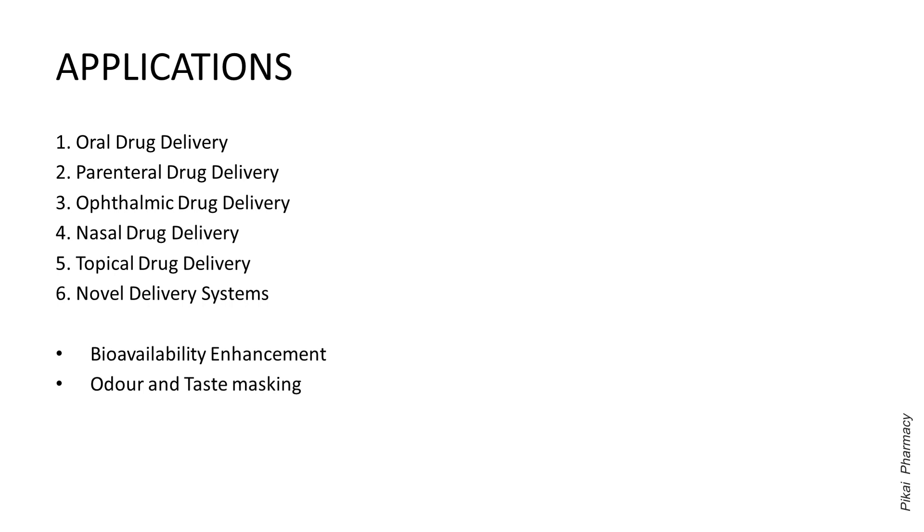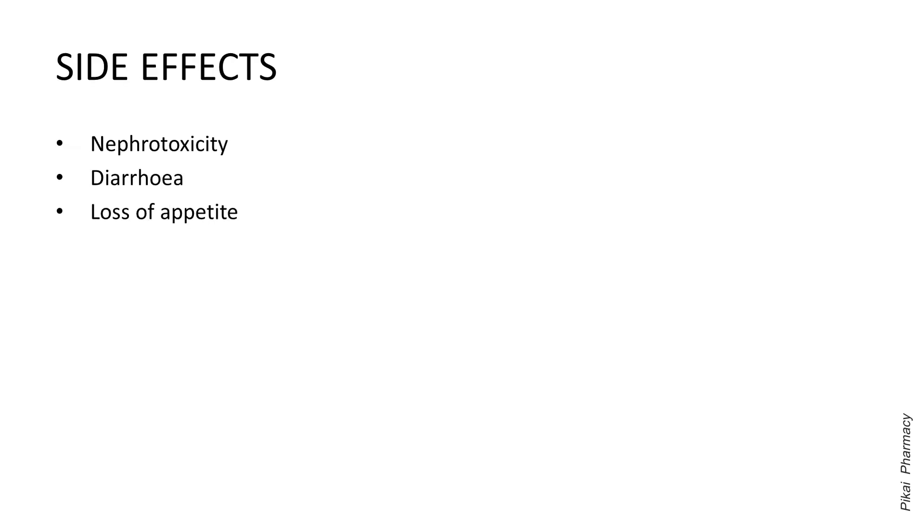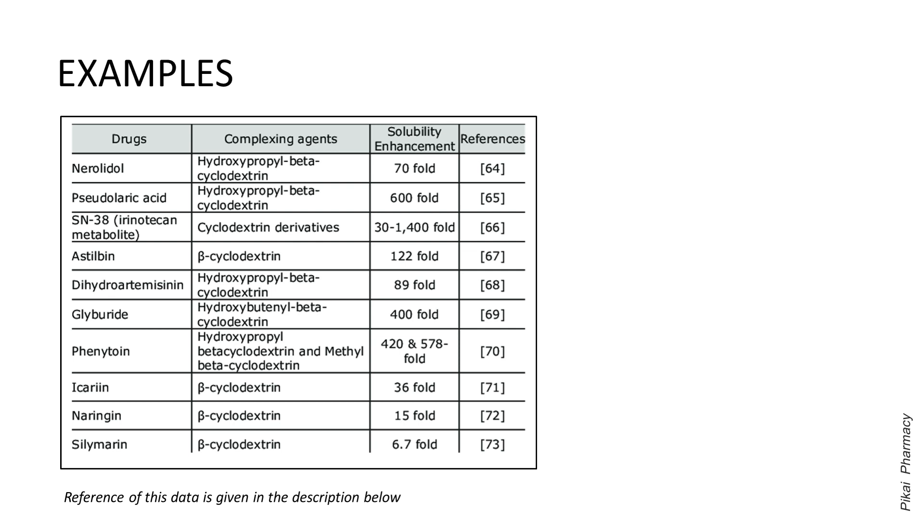Some probable side effects of cyclodextrins are nephrotoxicity, diarrhea, and loss of appetite. These last two side effects, diarrhea and loss of appetite, are more prominent for β-cyclodextrins. Cyclodextrins need to be stored in a tightly sealed container in a dry and cold place.